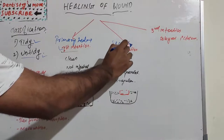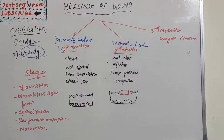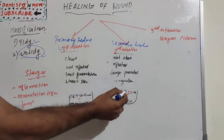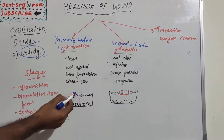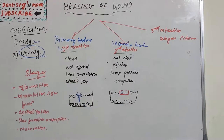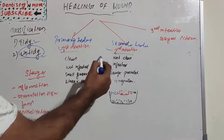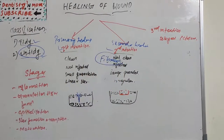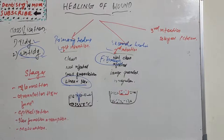Secondary healing or secondary intention is different. It is most commonly associated with untidy wounds and occurs where there is extensive soft tissue loss. There is no chance the tissue edges can be approximated because the tissue loss is very vast. The wound heals very slowly, with fibrosis rather than granulation tissue — lots of fibrous tissue forms, resulting in scar formation.